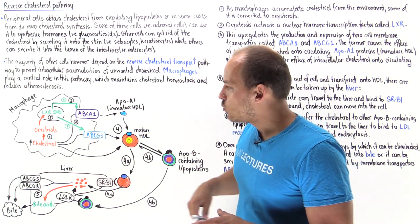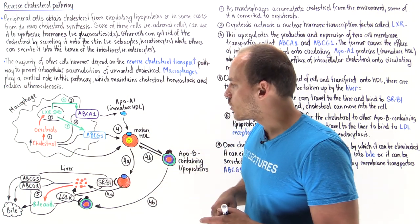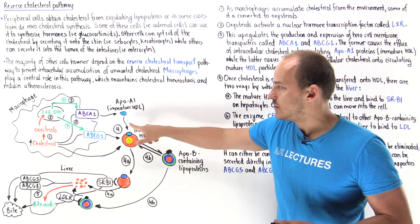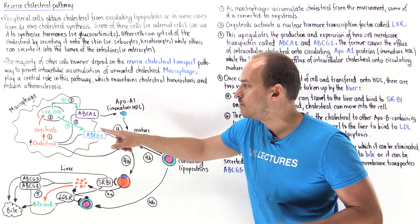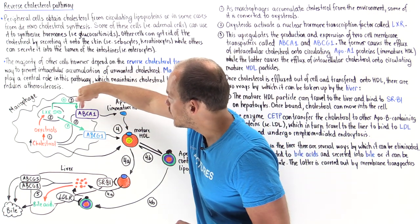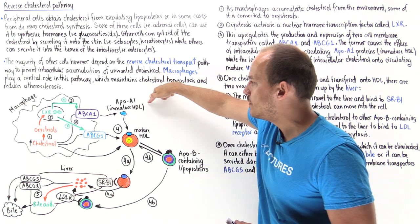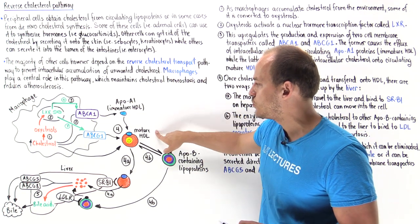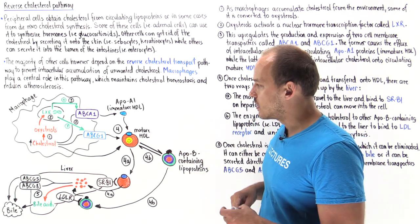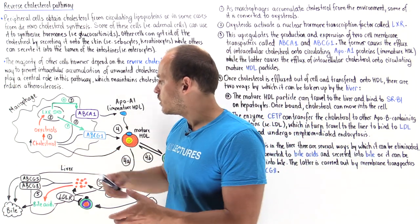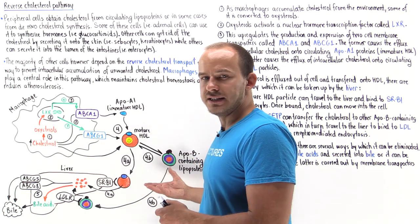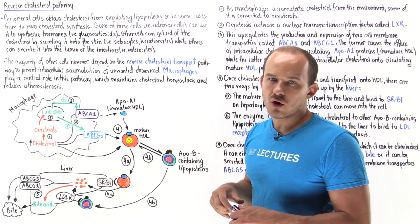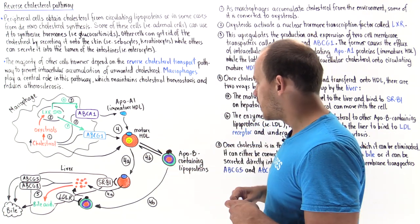The ABCG1 moves the cholesterol and transports it directly onto these mature HDL particles. So the difference between these two ATP binding cassette proteins is ABCA1 moves cholesterol onto immature HDL particles, but ABCG1 moves it onto mature HDL particles. In addition, some amount of free cholesterol can actually exit the cell via diffusion and then bind onto these mature HDL particles swimming around the capillaries of these cells.